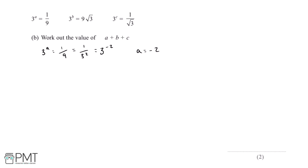Next we need to work out the value of b. 3 to the power of b is equal to 9 root 3. 9 is equal to 3 squared, and root 3 will be equal to 3 to the power of a half. Using our rules of indices, when multiplying numbers with powers we add the powers together. So 3 squared multiplied by 3 to the power of a half equals 3 to the power of 2.5, and therefore b is equal to 2.5.